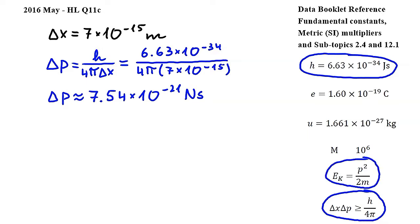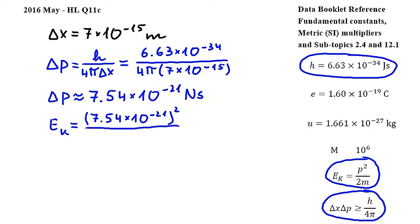Next, we will use this equation from subtopic 2.4, where Ek is kinetic energy, p is momentum, and m is mass. Substituting, we get Ek is equal to 7.54 times 10 to the power of negative 21 squared, divided by 2 times the mass of the alpha particle.